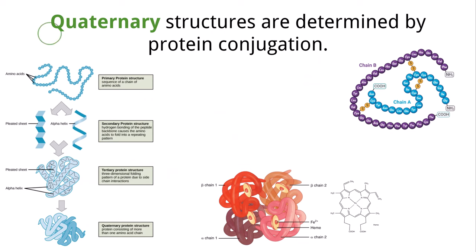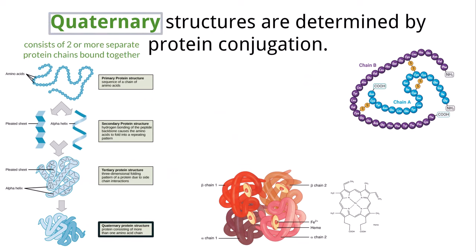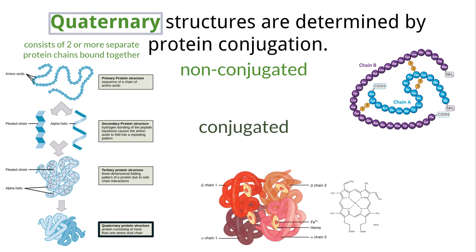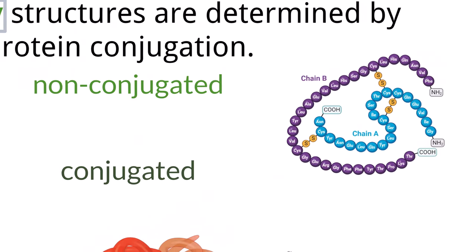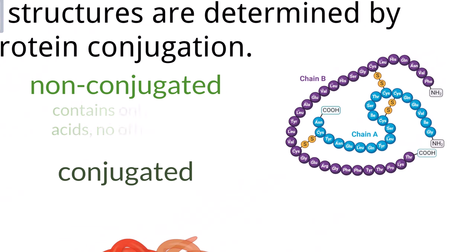The last level of protein structure is called quaternary structure. This is when two or more separate protein chains bind together to make a larger protein structure. There are two different versions of this that scientists classify, which are called conjugated and nonconjugated quaternary proteins. This is describing if other structures that are not proteins are also bound to the protein, which can alter its form and function. An example of a nonconjugated protein — meaning it does not have any additional structures that are not proteins — is insulin.